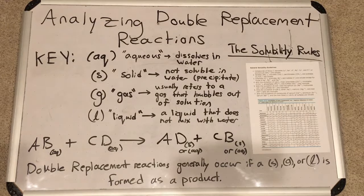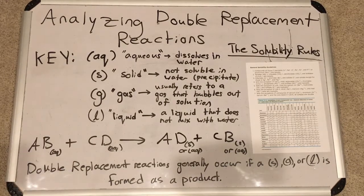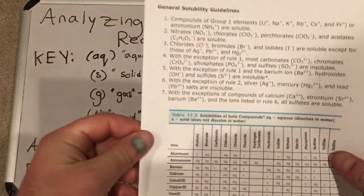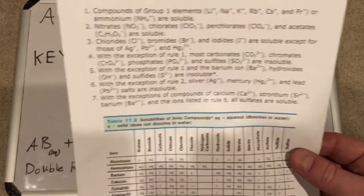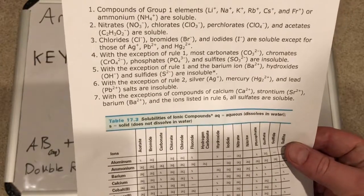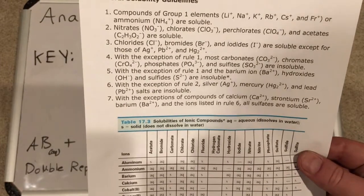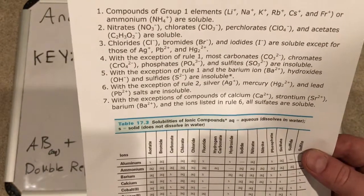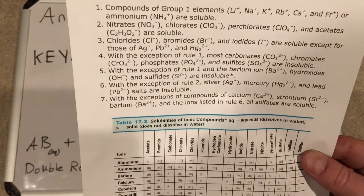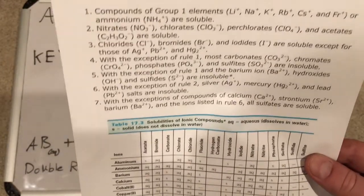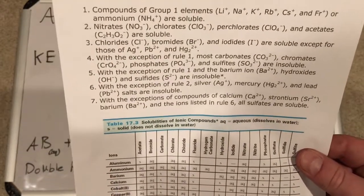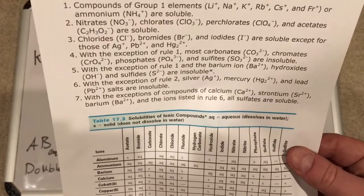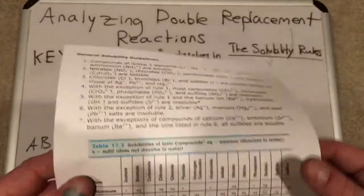How do you tell if something is aqueous or not? You use a solubility chart or the solubility rules, and I have that right here. There are about seven rules. The first two rules tell you what's always soluble in water. Any cations — lithium, sodium, potassium, rubidium, cesium, and francium, all the group one elements — and ammonium: any compounds you make with those are actually soluble. No matter what the anions are, it's soluble. Rule number two tells us all compounds made with nitrates, chlorates, perchlorates, and acetates are soluble as well. Those are always soluble.